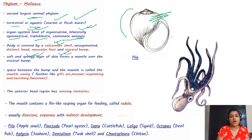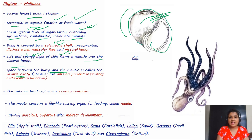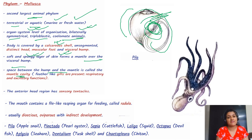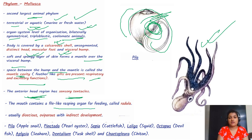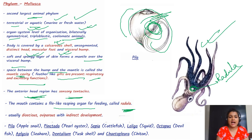A soft and spongy layer of skin forms a mantle over the visceral hump. The space between the hump and the mantle is called the mantle cavity. Feather-like gills are present which have respiratory and excretory functions. The anterior head region has sensory tentacles. The mouth contains a file-like grasping organ for feeding called the radula. They are usually dioecious, oviparous, and have indirect development.